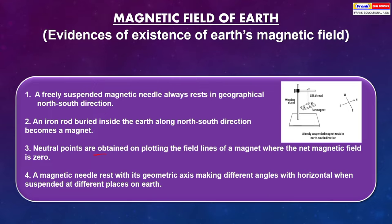Neutral points are obtained on plotting the field lines of a magnet where the net magnetic field is zero. A magnetic needle rests with its geometric axis making different angles with horizontal when suspended at different places on the earth. These are some of the evidences of existence of earth's magnetic field.